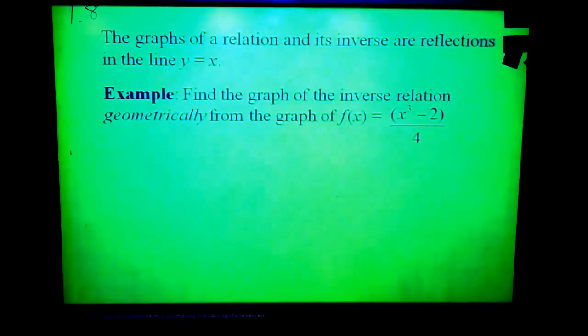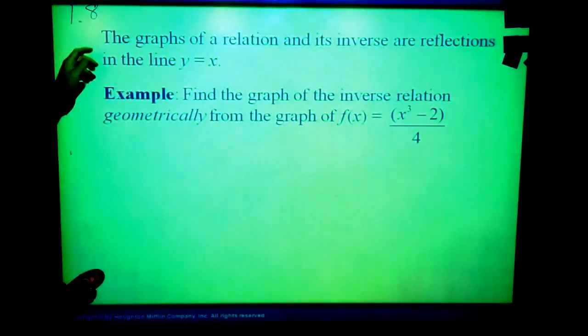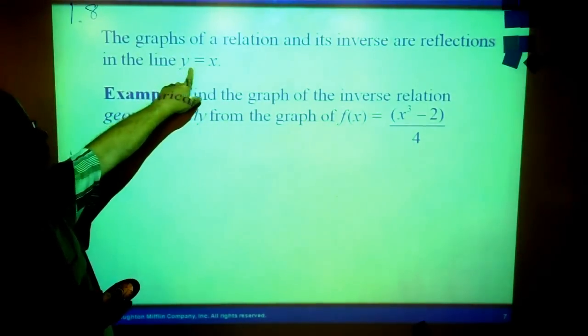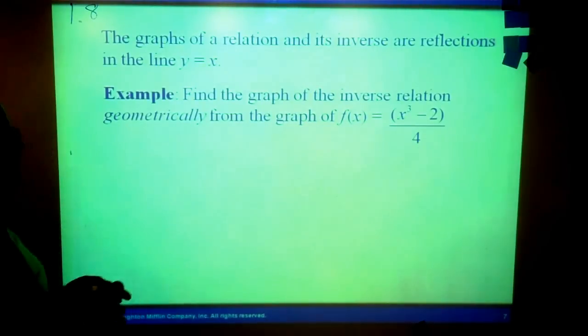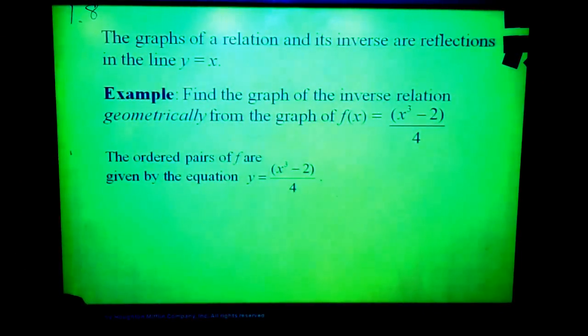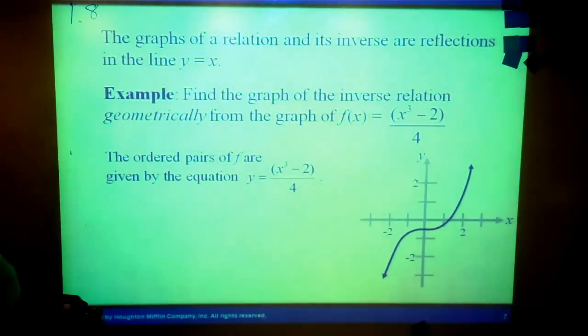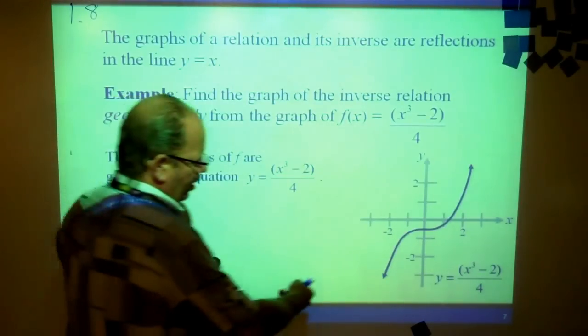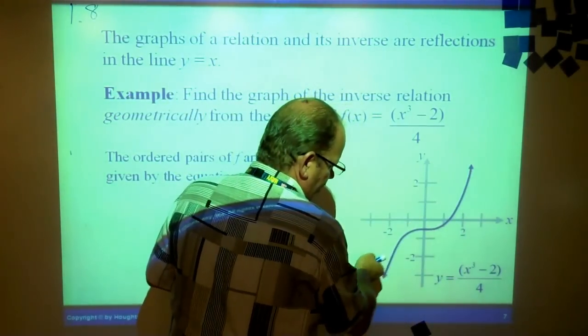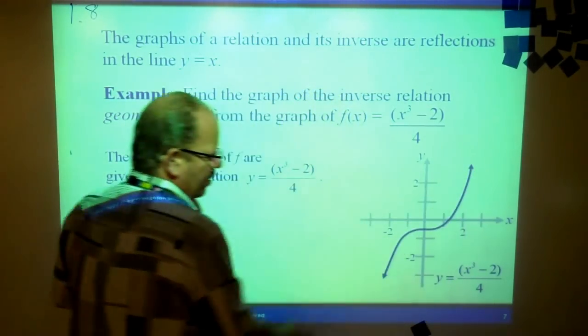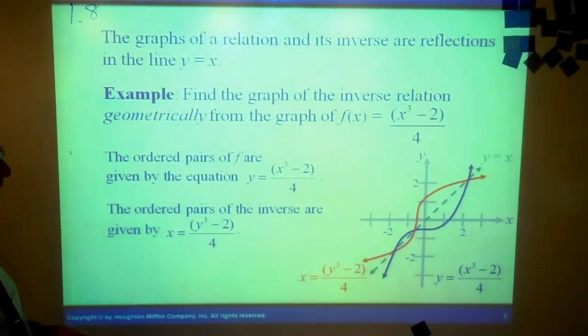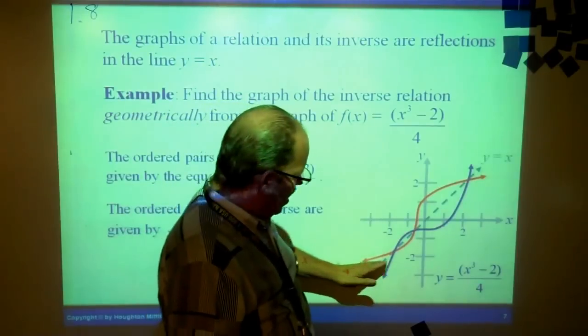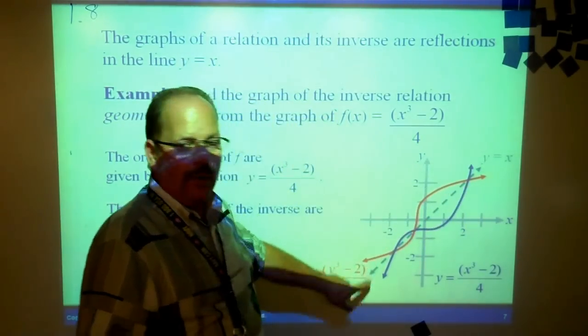The graphs of a function and its inverse or of a relation and its inverse are going to be reflections along the line where y equals x. Here's an example. If we drew in the line where y equals x right here and then reflected that graph, it would look just like that. So the red one is the inverse of the blue one.